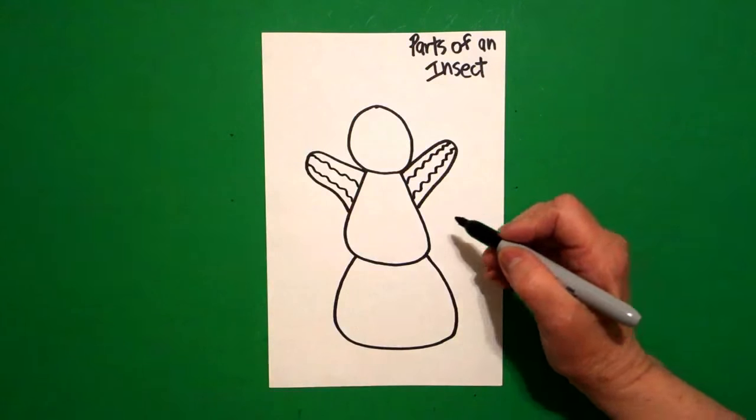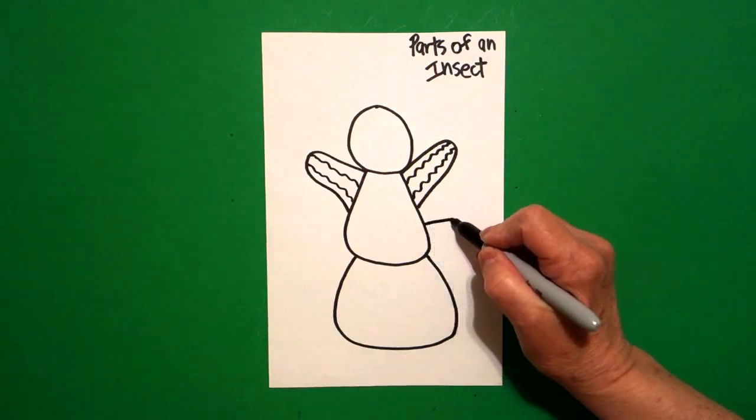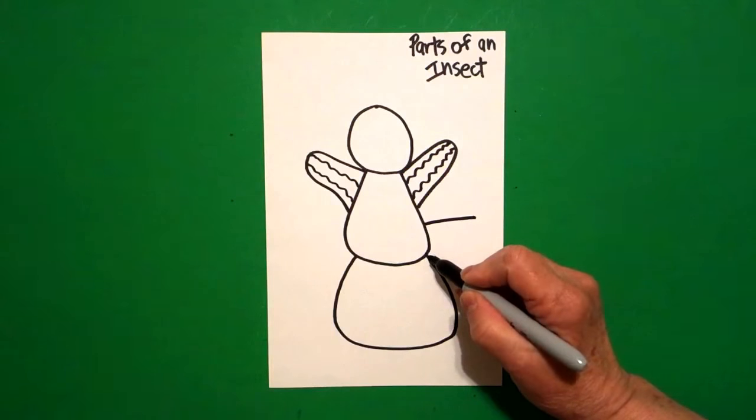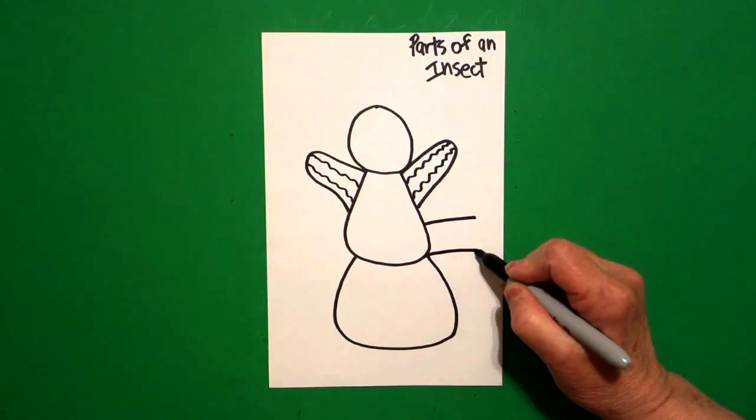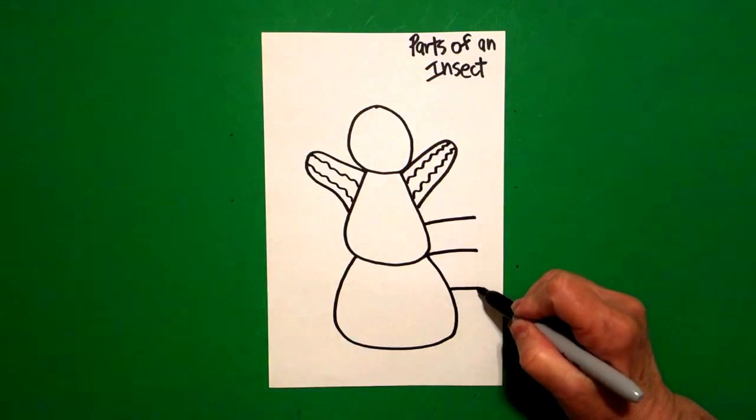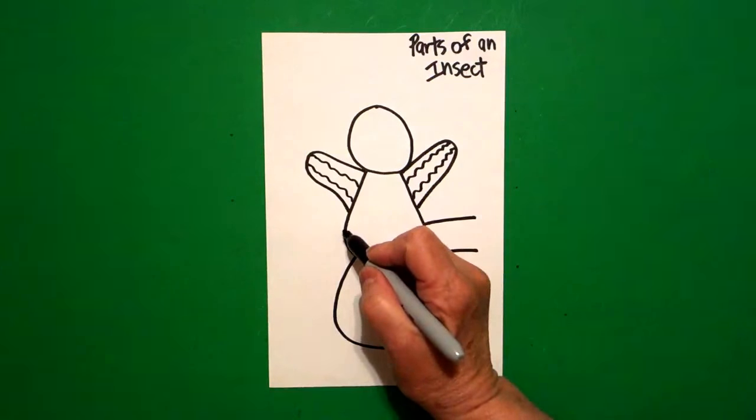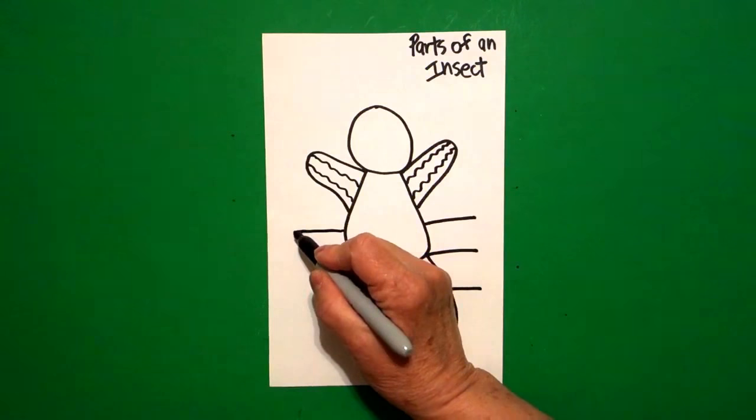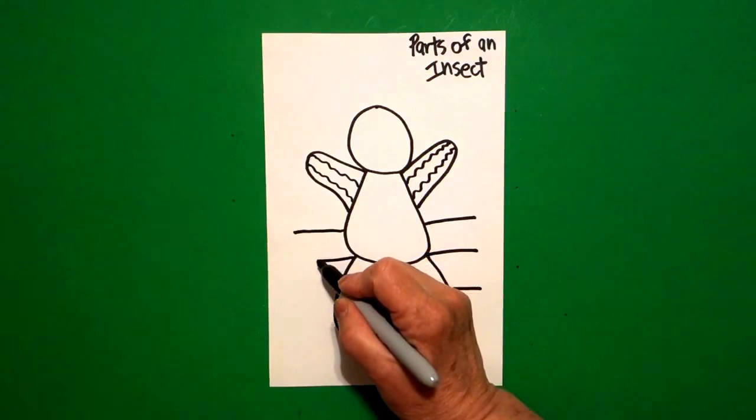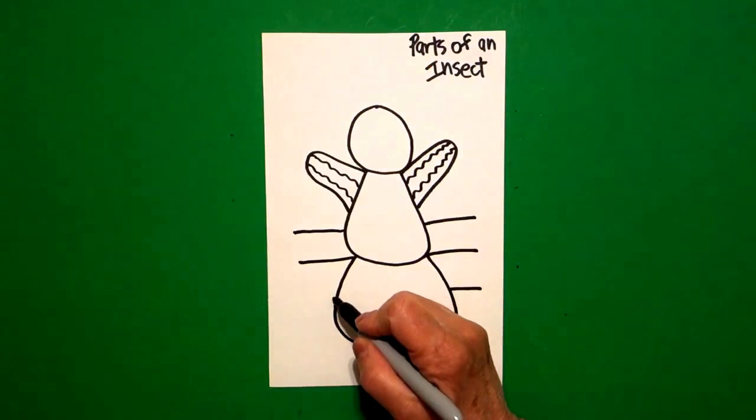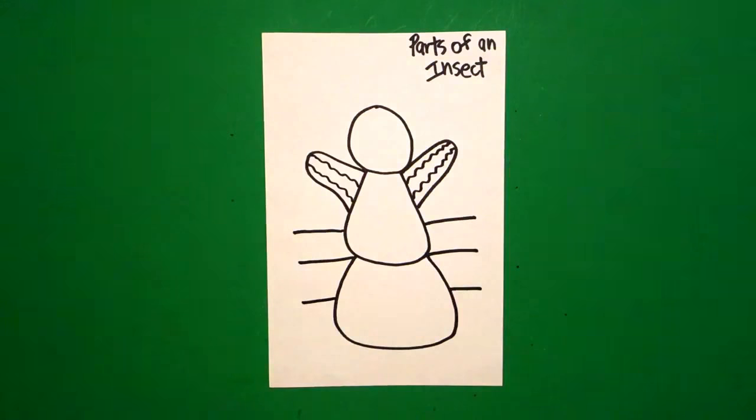Now right underneath I'm going to draw one, right here at this point, two, and right about here, three straight lines on the right. Jump over, we're going to draw one, two, three straight lines on the left.